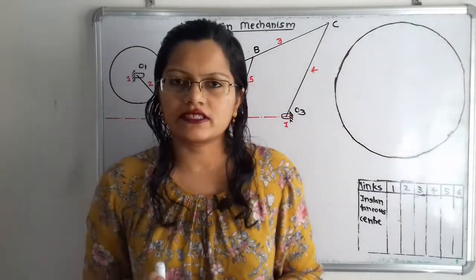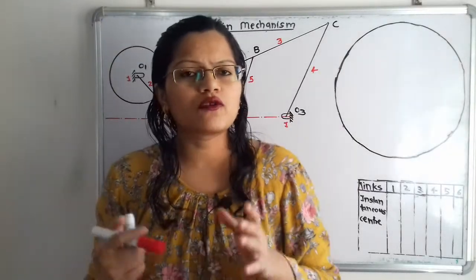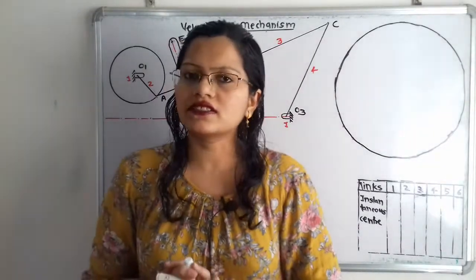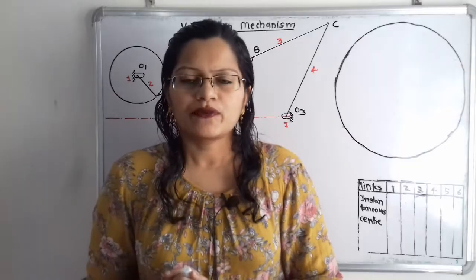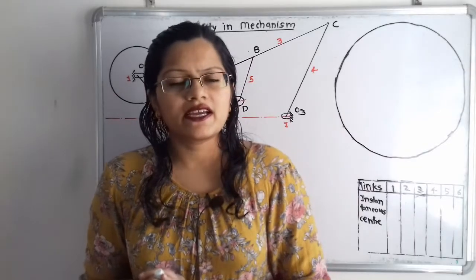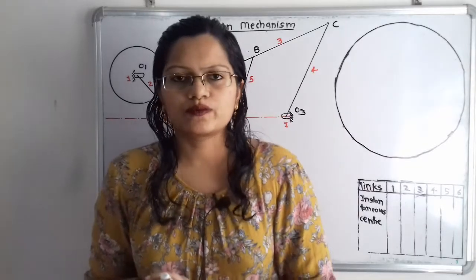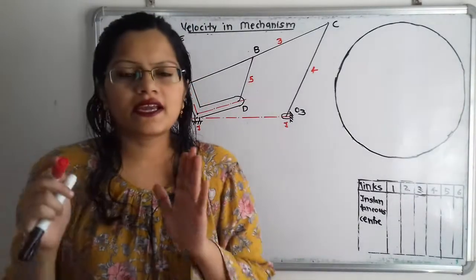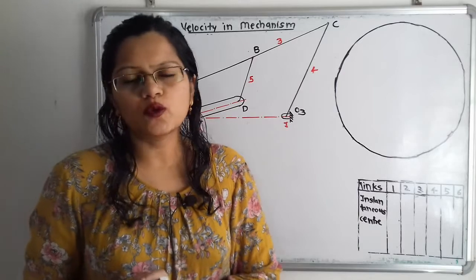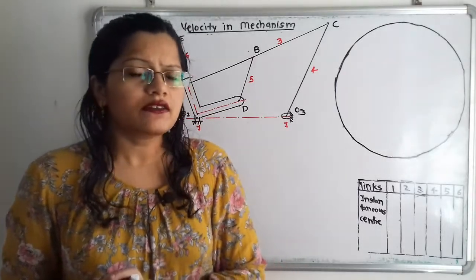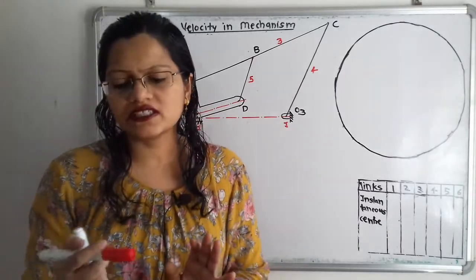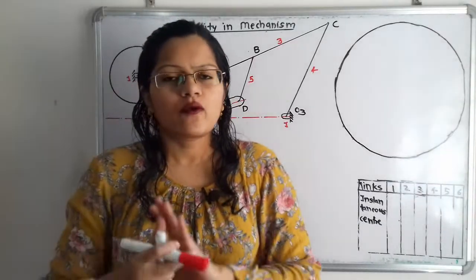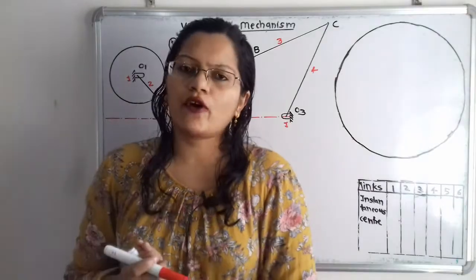Now we find the total number of instantaneous centers using the formula: N = n(n−1)/2, where n is the number of links. Here n = 6, so N = 6(6−1)/2 = 15. There are 15 instantaneous centers in this mechanism.